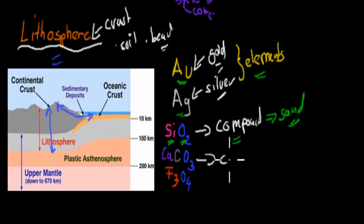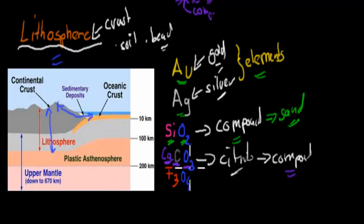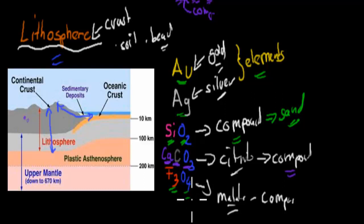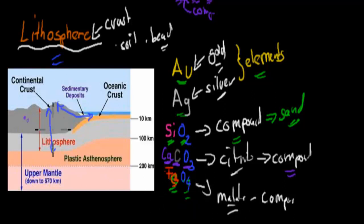This is calcite, which is a compound. Many of our rocks are made of this — it has calcium, carbon, and oxygen: three different types of elements which make it a compound. And this is magnetite, which is another type of compound. It has three iron atoms and four oxygens — two different types of atoms, Fe (iron) and oxygen — and together they form a compound called magnetite, which is found in many of our rocks.